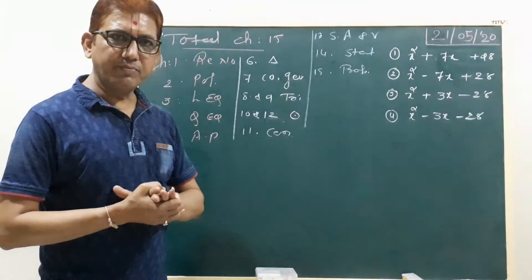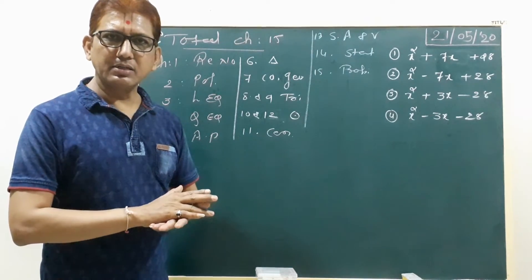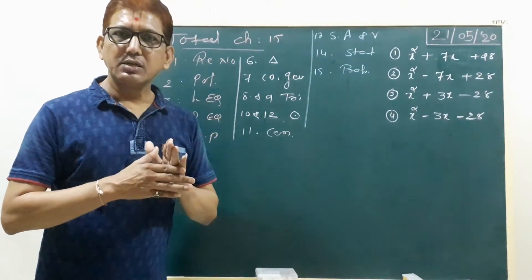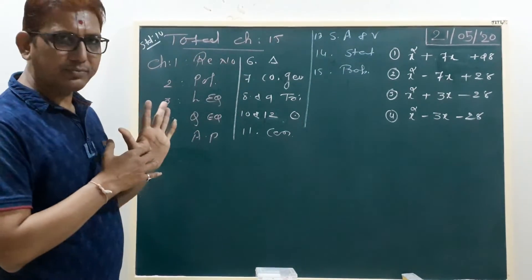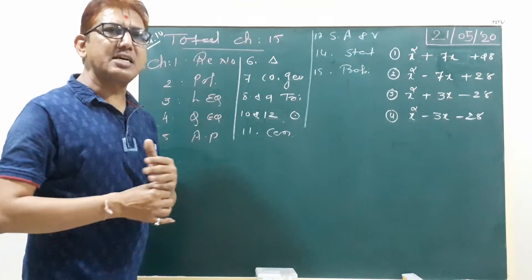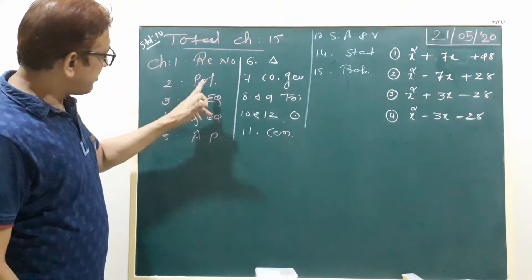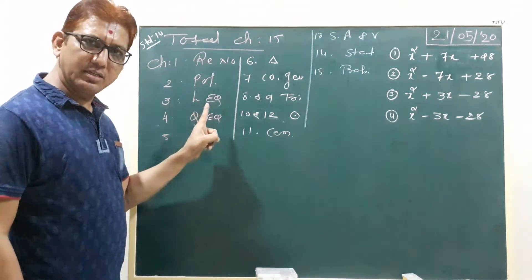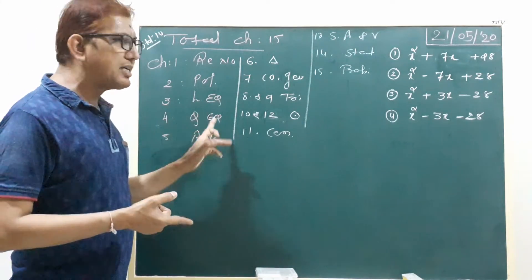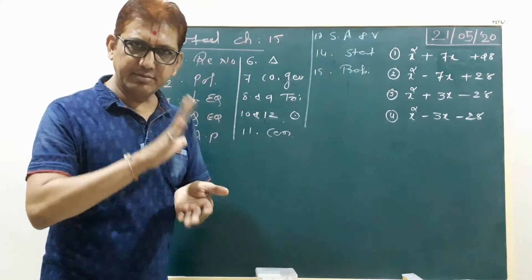We write the total chapters in 10th standard Gujarat board — 15 total chapters. Chapter 1 is Real Numbers, which you have already studied in lower standard. Chapter 2 is Polynomials, also studied in 9th standard. Chapter 3 is Linear Equations in Two Variables, and Chapter 4 is Quadratic Equations — all three you have already studied in 9th standard.